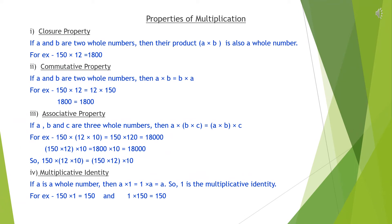Now let's understand properties of multiplication. First, closure property. If a and b are two whole numbers, then their product a multiplied by b is also a whole number. For example, 150 and 12 are whole numbers, and their product 1800 is also a whole number. Second, commutative property. If a and b are two whole numbers, then a multiplied by b equals b multiplied by a. For example, 150 multiplied by 12 equals 1800, and 12 multiplied by 150 equals 1800. In this property, we only change the order of the numbers and get the same product.